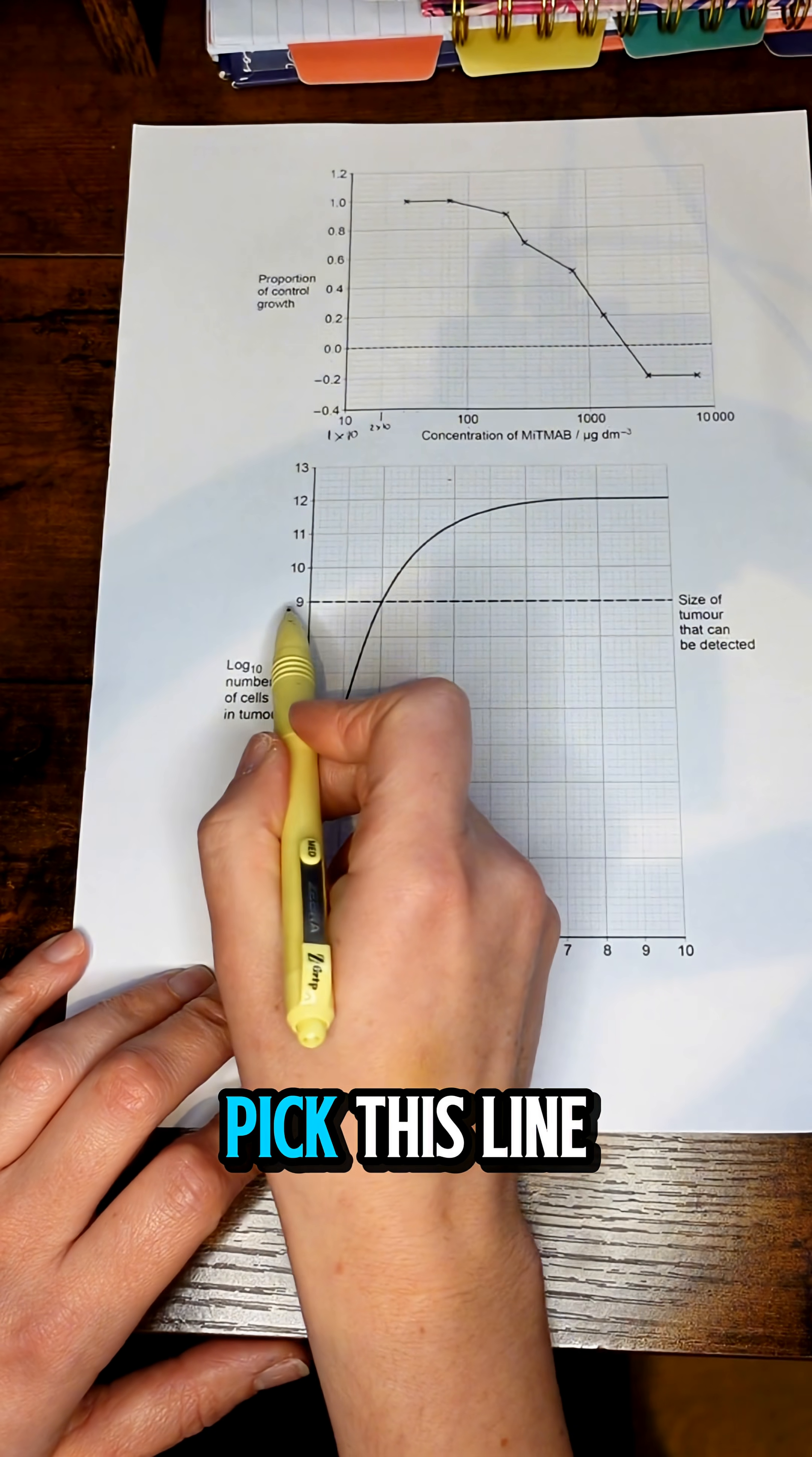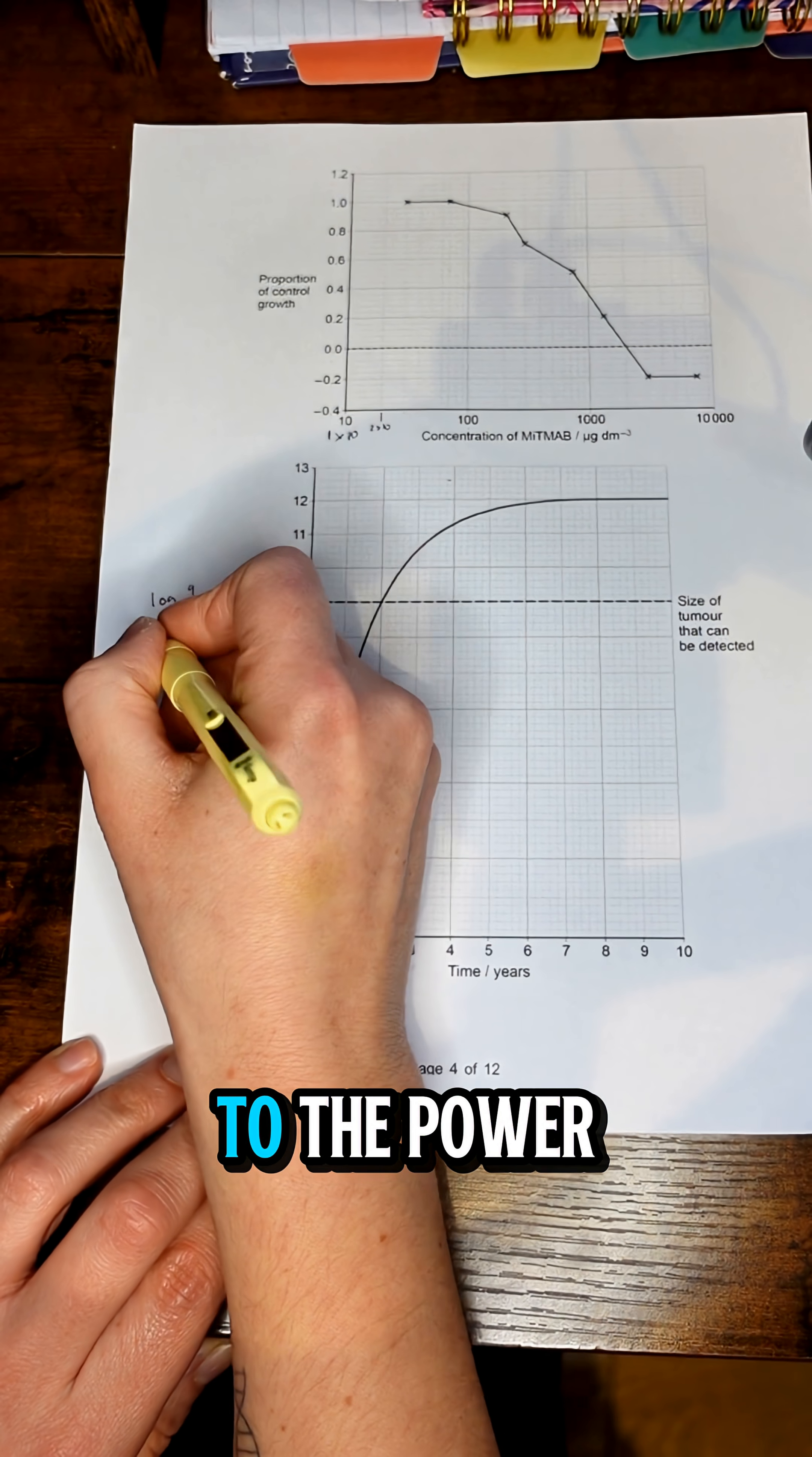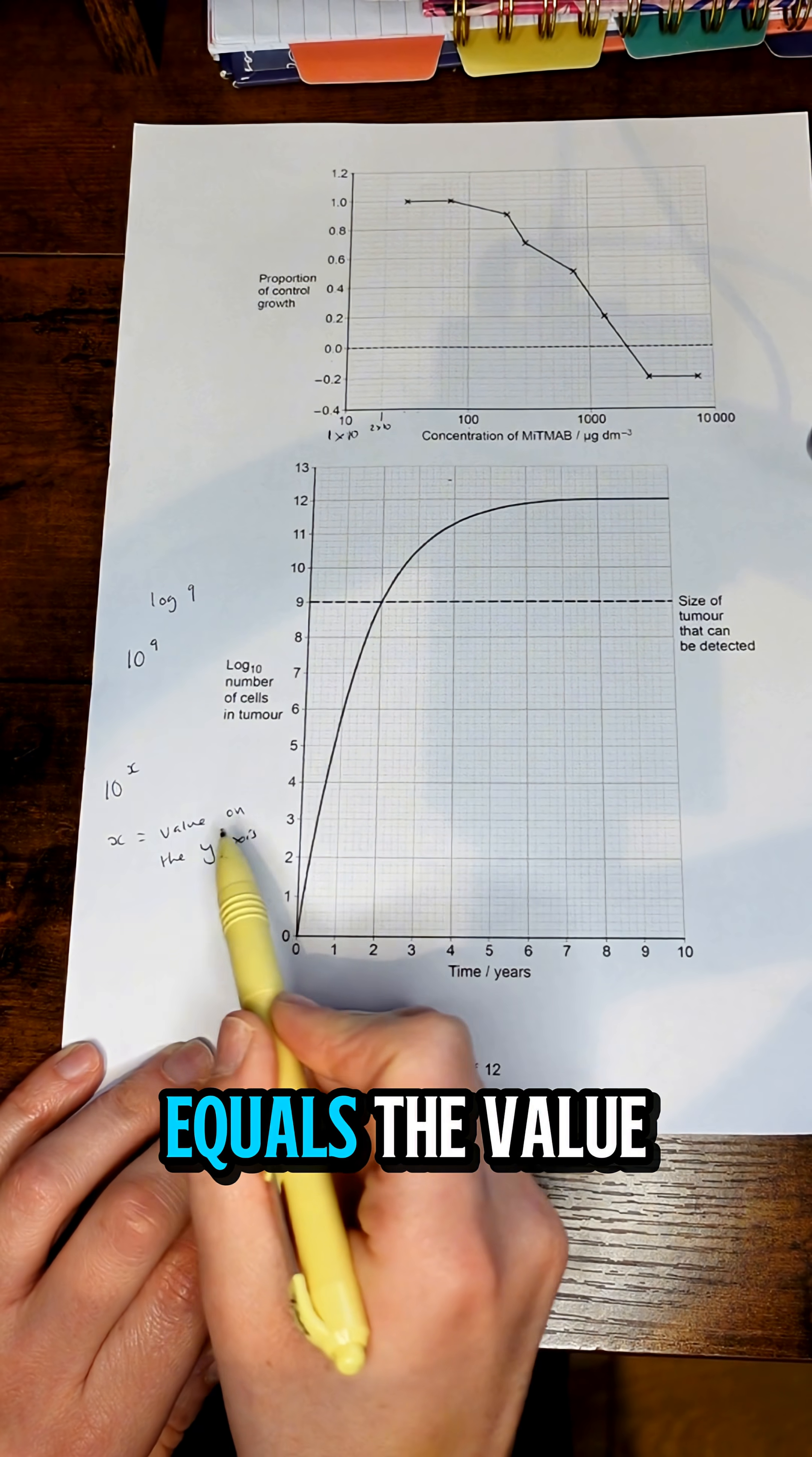So let's just pick this line here where we've got 9 - that is log 9. And if we've got log 9, to convert it back to the original we do 10 to the power of 9. So for any of these that you want to convert back, it's 10 to the power of x, where x equals the value on the y-axis.